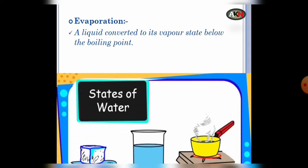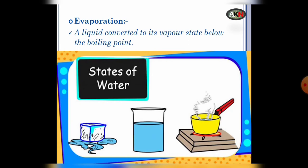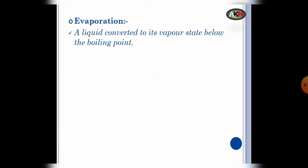Next process of changes is evaporation. A liquid is converted to its water vapor below the boiling point. Students, in this process a state of water is changed into gaseous state, but below the boiling point. Next way is by forcing.